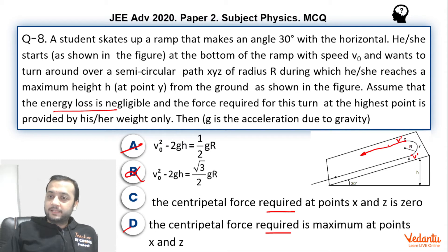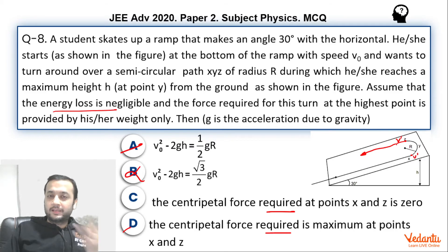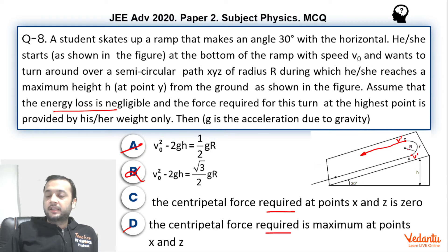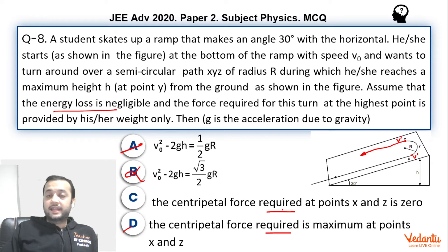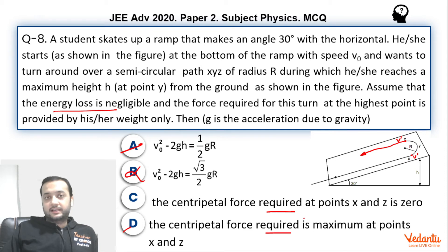At Z the particle can simply continue in a straight line, so there is no requirement of any force. Hence at Z there is no requirement of any centripetal force — it can continue along that straight line. Even in a gravity-free space it would continue at constant velocity. So the word 'required' creates the ambiguity, and in my opinion option D should not be correct.